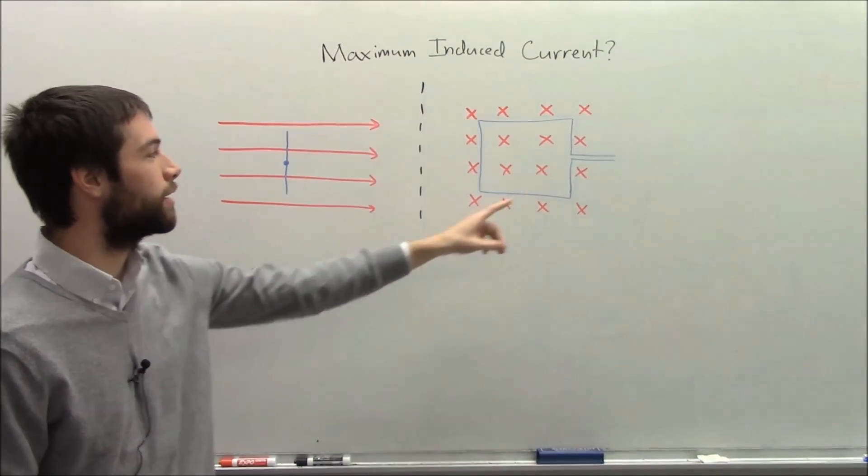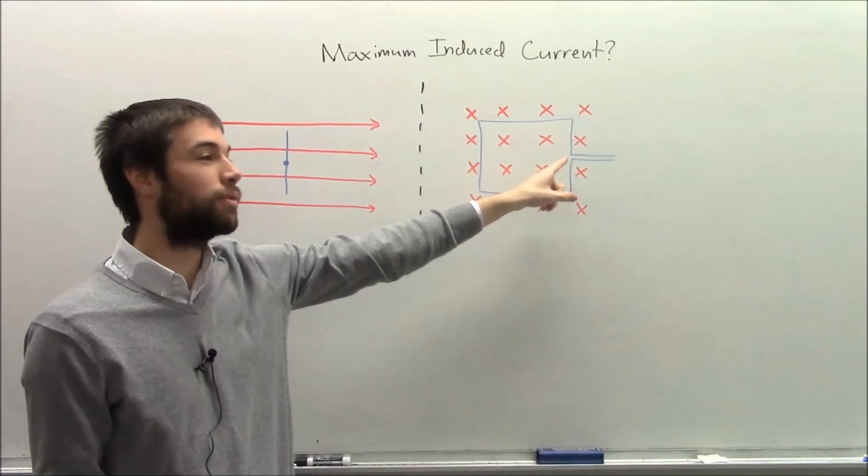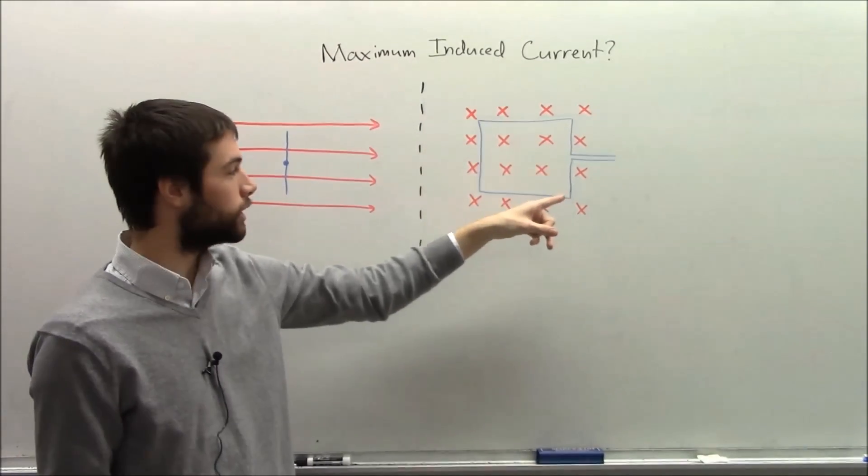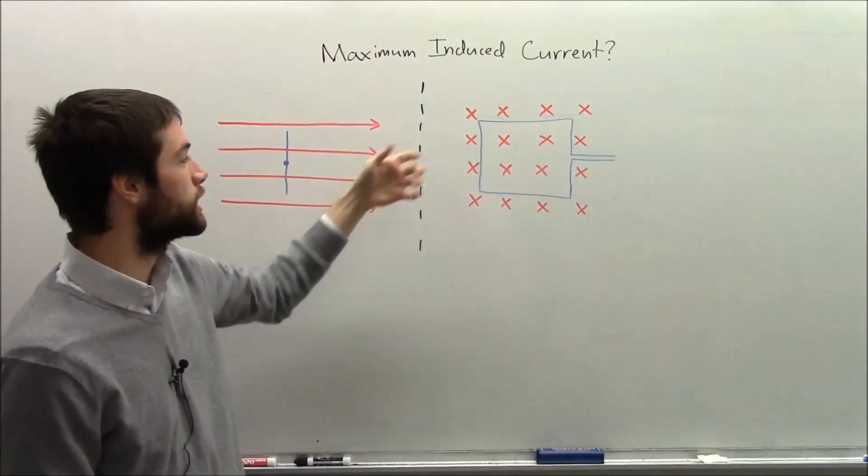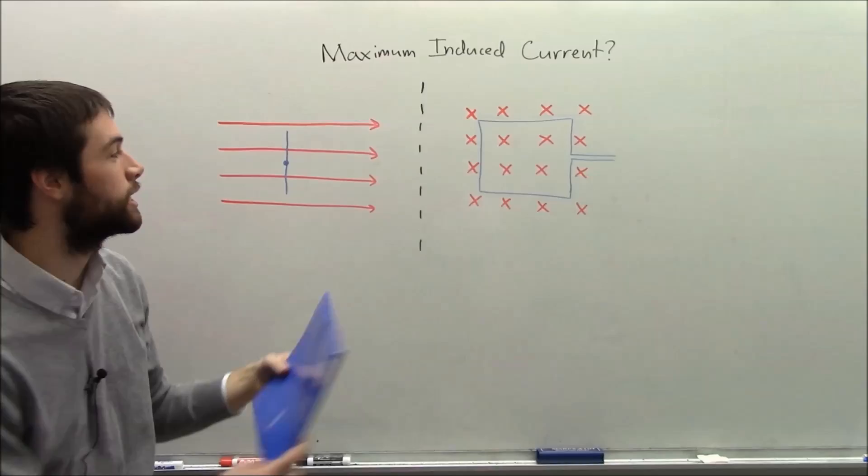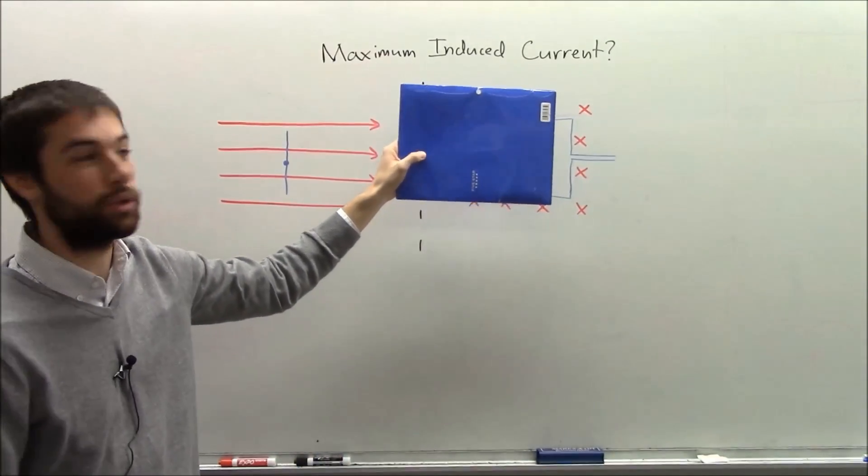So the question we have is we have a loop of wire, which is in blue here, and it's in a magnetic field, which is these red X's. The question is, the loop is going to spin at some constant rate.